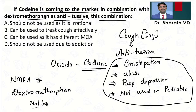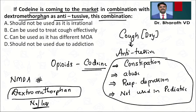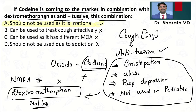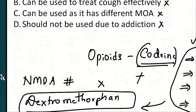Most patients are started on dextromethorphan. The question asks: can we combine codeine with dextromethorphan? No — because we introduced dextromethorphan to avoid the adverse effects of codeine. If we add them together and give to the patient, it is obviously an irrational combination. Even though they have different mechanisms of action, the adverse effects will not come down. This combination should not be used because it is irrational.